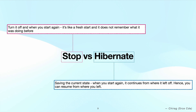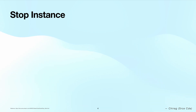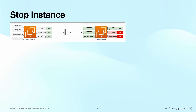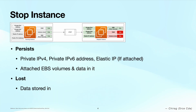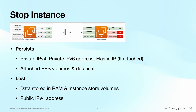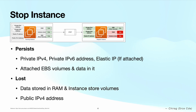Now let's understand what happens when you stop an EC2 instance at a high level. The running instance has RAM, instance store volume (which is the temporary storage), EBS volume, private IPv4 and IPv6 addresses, public IPv4 address, and elastic IP address if attached. When you stop and restart the instance, the existing private IPv4 and IPv6 addresses, EBS volume and data within it, and elastic IP address are preserved. But the public IPv4 address and data stored in RAM and instance store volume are lost.